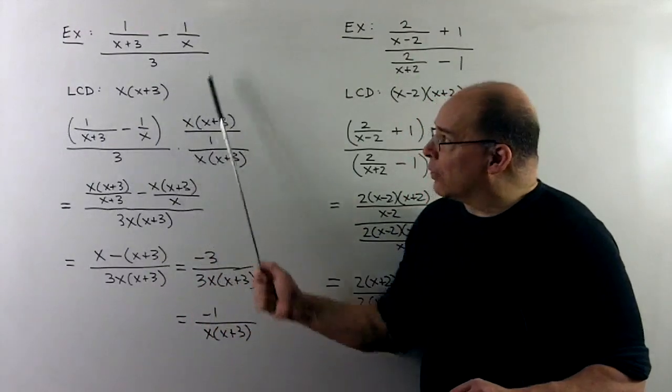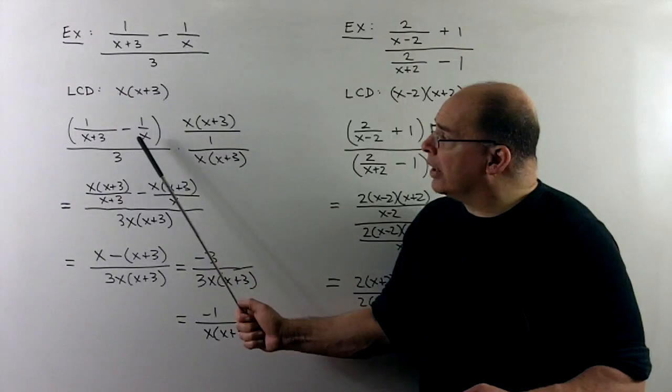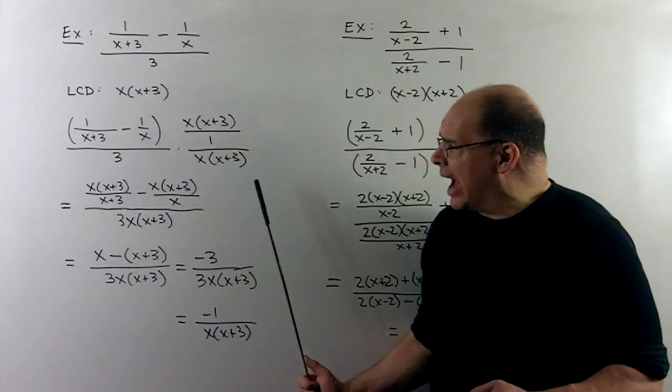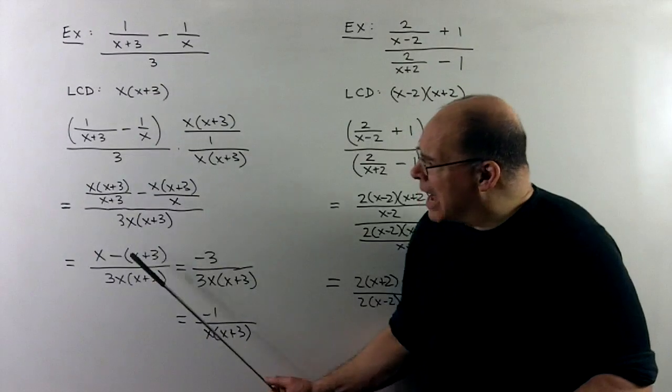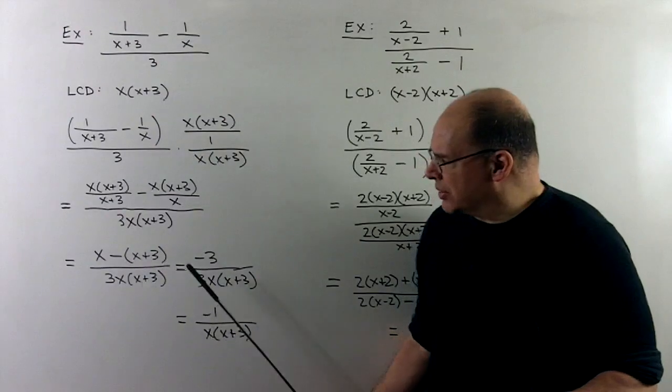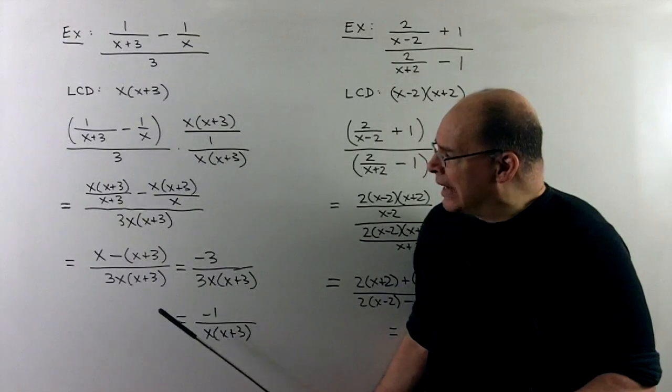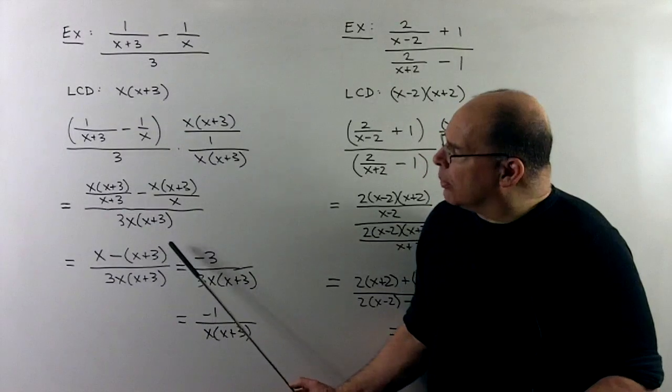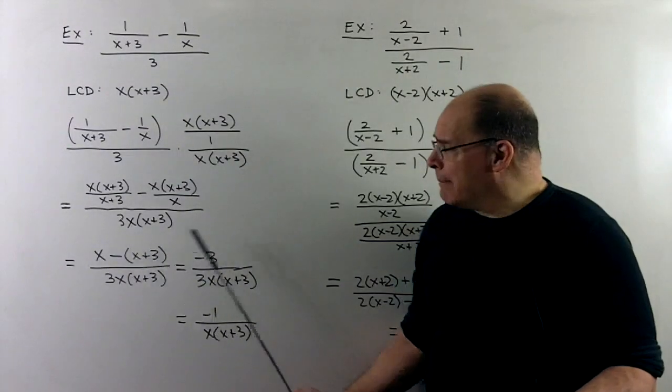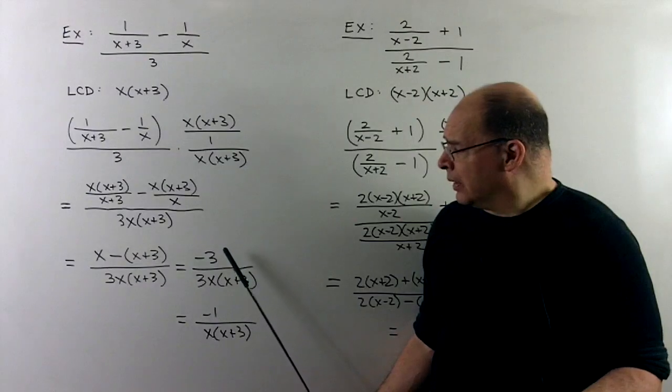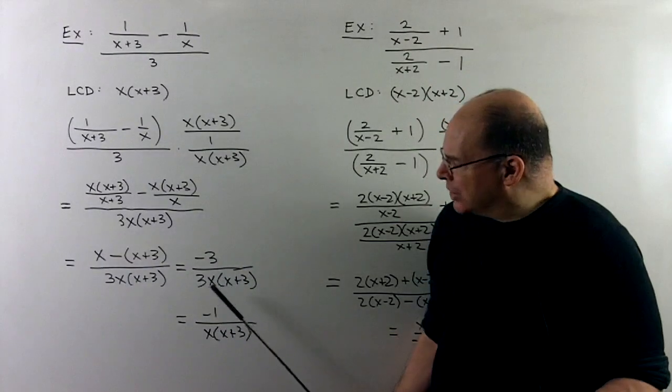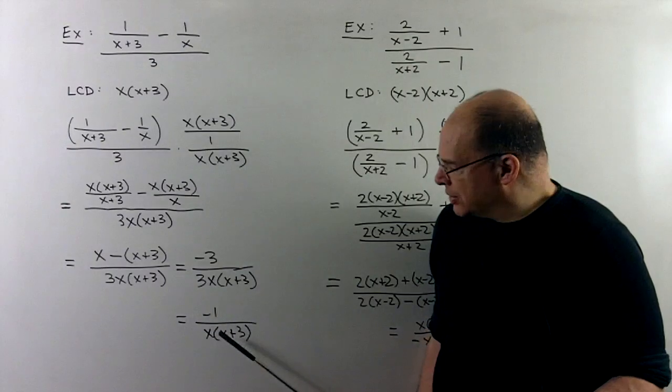We distribute in the numerator. Note that we put parentheses around the original numerator. And so what we're going to get when the denominators clear out, I'll have x minus quantity x plus 3 over 3x times x plus 3. Now we need to distribute the minus sign in the numerator. That's going to give us x minus x, so the x's go away. And then I've got a minus 3 left over. The minus 3 cancels with the 3 to leave me with minus 1 over x times x plus 3.